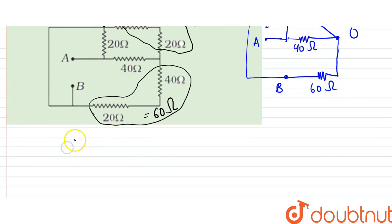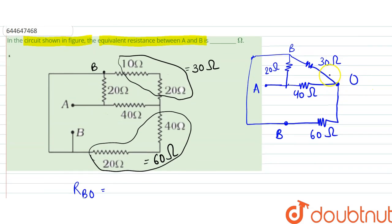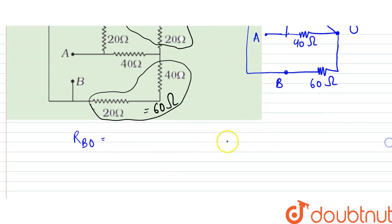So the resistance between B and O, that would be equal to 30 ohms and 60 ohms. So they are in parallel. So 30 into 60 divided by 30 plus 60.